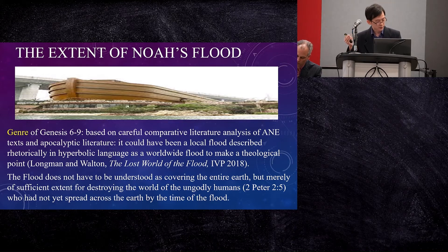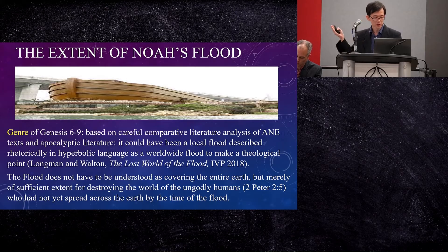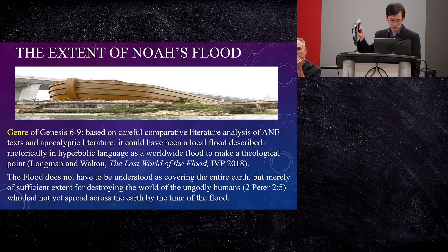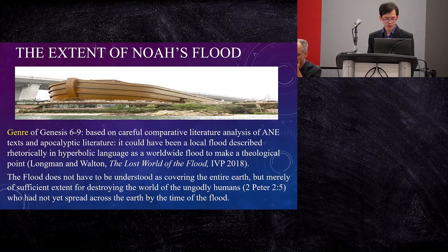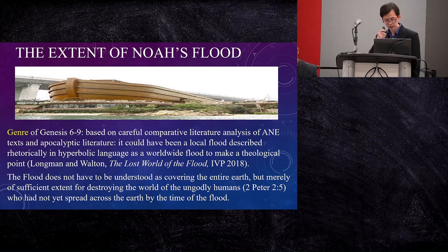Why? Because human beings had not yet spread across the whole earth by the time of the flood. I want to emphasize that this interpretation is not made as a compromise to modern science — no — but it's based on proper hermeneutical principles: analyzing the genre, which is a proper hermeneutical principle that Professor Longman and Walton explain in great detail in their book. So it is a well-grounded interpretation, and this interpretation also implies that the flood doesn't have to cover the whole earth.